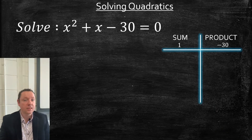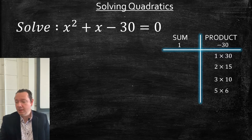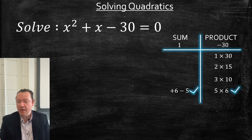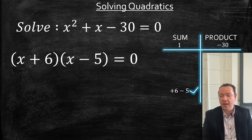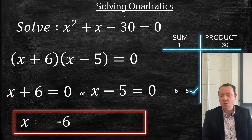Sum is 1 and the product is negative 30, so we're looking for numbers that multiply to make 30. We can try 1 and 30 — doesn't make a sum of 1. 2 and 15 — doesn't make 1. 3 and 10 — doesn't make 1. Eventually we get to 5 and 6. To get a sum of 1, we need plus 6 and take away 5. So the bracket is (x + 6)(x − 5) equals 0. Solving: x plus 6 equals 0 gives x equals negative 6, and x minus 5 equals 0 gives x equals 5.